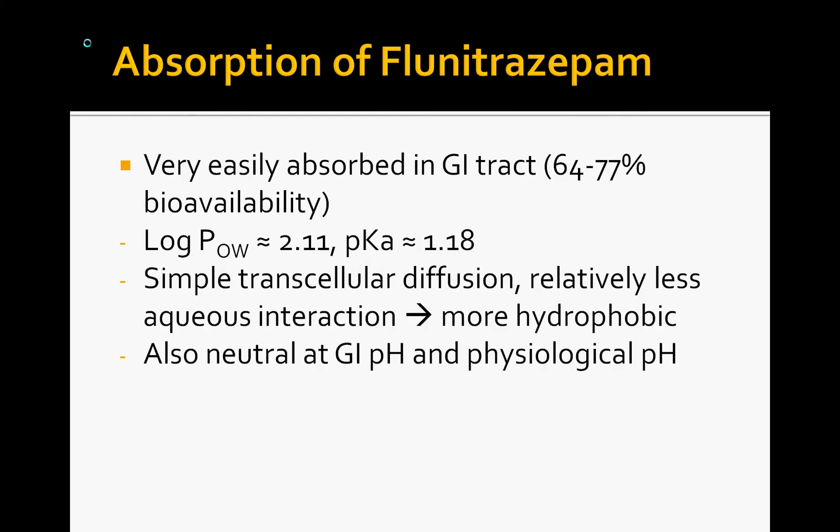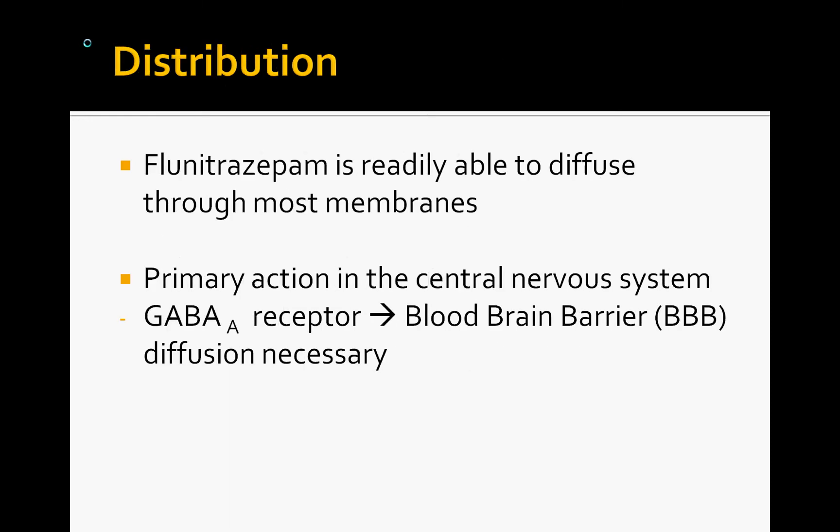It is very easily absorbed in the gastrointestinal tract, with about 64 to 70% bioavailability. From the log POW, you can see that it is hydrophobic, so interaction with the membrane environment is achieved very easily. Simple transcellular diffusion is achieved very easily. And at any pH found in the gastrointestinal tract or other physiological pHs, Rohypnol will be neutral.